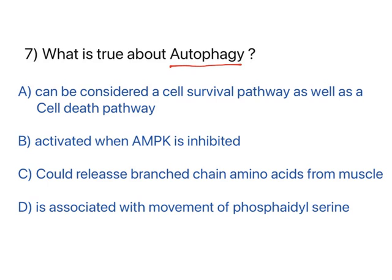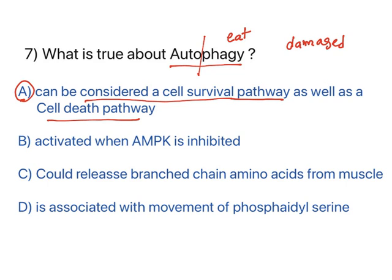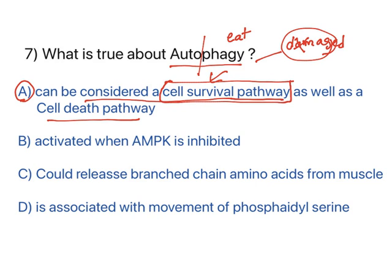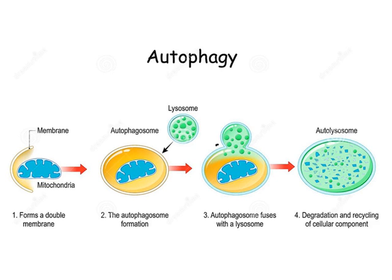Next term: autophagy. 'Auto' means self, 'phagy' means to eat. Autophagy can be considered both a cell survival pathway and a cell death pathway. When an organelle is damaged beyond repair, the cell releases lysozymes to degrade that organelle. By removing the damaged organelle, the cell may survive — hence cell survival pathway. But sometimes autophagy also kills the cell — hence cell death pathway.